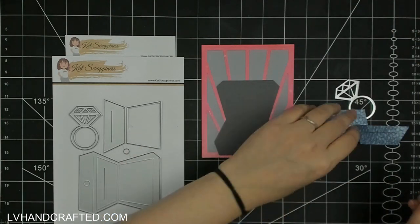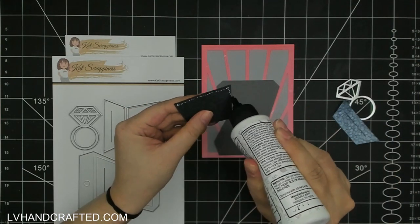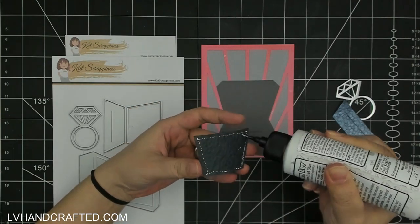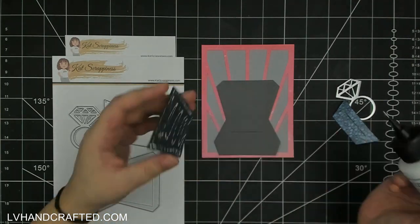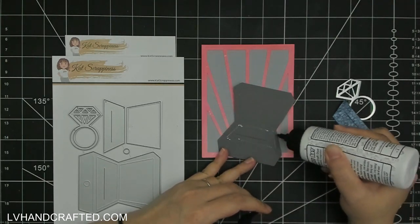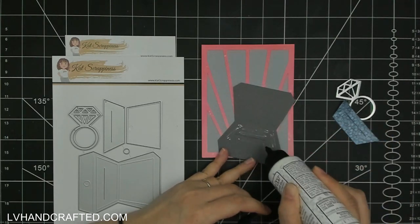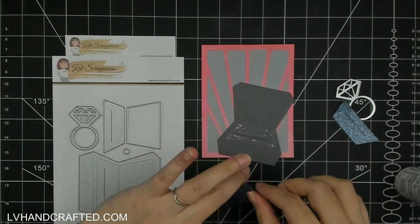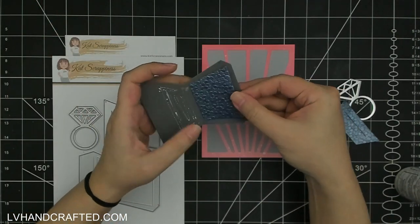This die set here, super awesome. It's called Say Yes and it's got this really large actually ring box, and I would say kind of a comically large diamond ring as well. Super adorable.